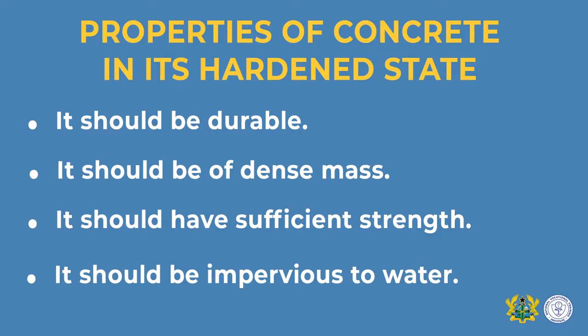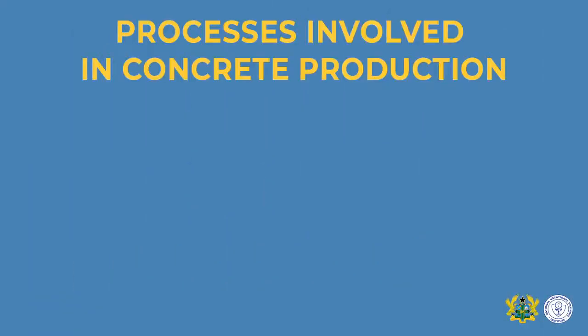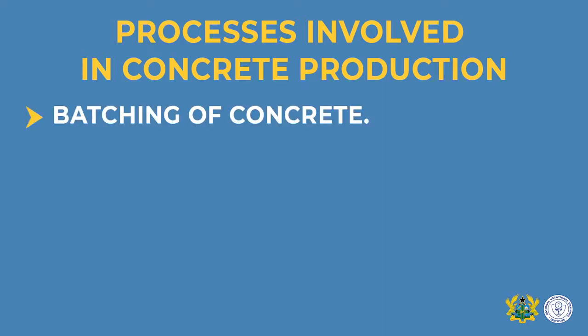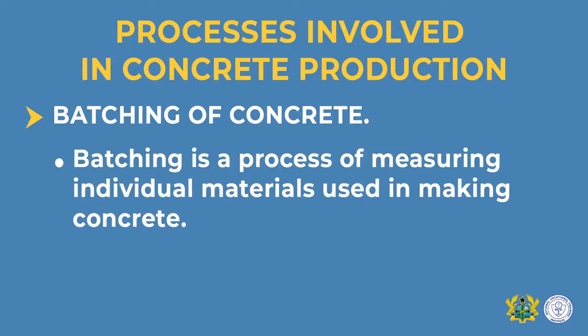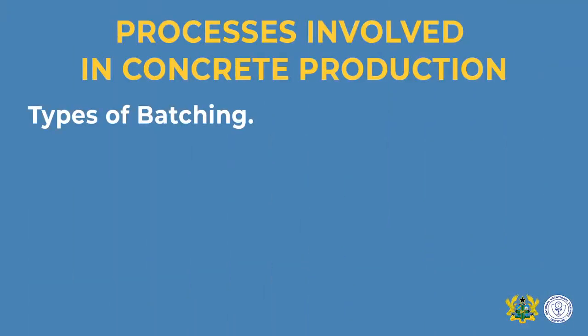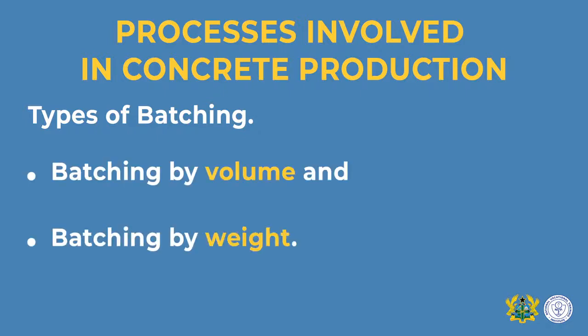Let us consider the processes involved in concrete production. The first process is batching of concrete — the process of measuring the individual materials in their correct proportion. There are two methods: batching by volume and batching by weight.